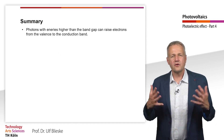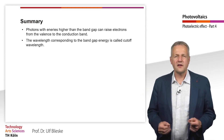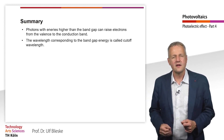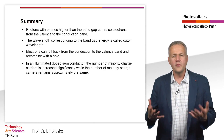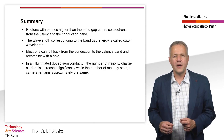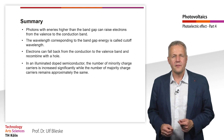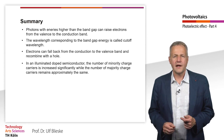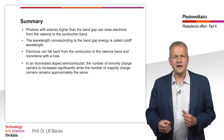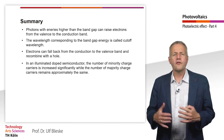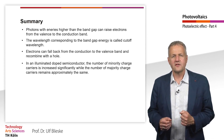Let us summarize. Photons whose energy is higher than the band gap can lift an electron from the valence to the conduction band. The wavelength associated with the band gap is called the cutoff wavelength. Electrons can fall back from the conduction into the valence band and recombine with a hole. In an illuminated doped semiconductor, the number of minority carriers is significantly increased, while the number of majority carriers remains about the same. We have now dealt with the internal photoelectric effect, which will later explain the photocurrent in a solar cell. To understand the photovoltage, we will look at charge carrier transport and the p-n junction in the next chapters. Thank you for your attention.